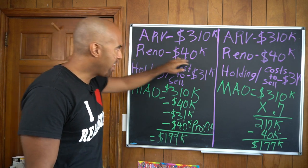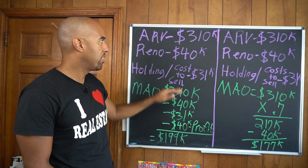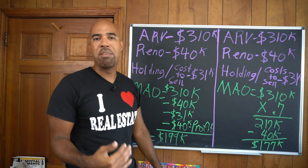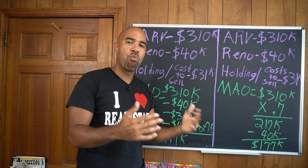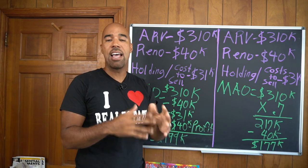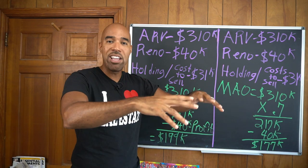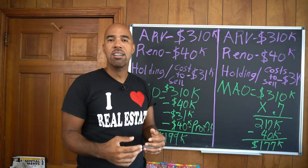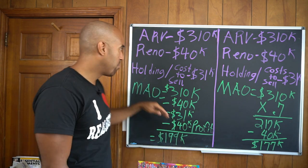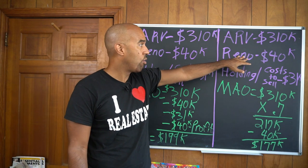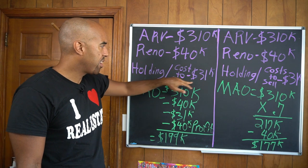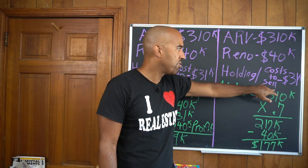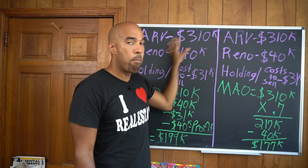ARV is $310K. Renovation — which we'll walk through shortly — is $40,000. I personally think it'll be closer to $50K but Ron says $40K. Ron has relationships with contractors who work for major apartment complexes, so we get them after hours at a reasonable price. Relationships are everything in this business. Renovation: $40K. Holding costs and cost of sale: I average about 10–11%, which comes out to $31,000 on both sides.